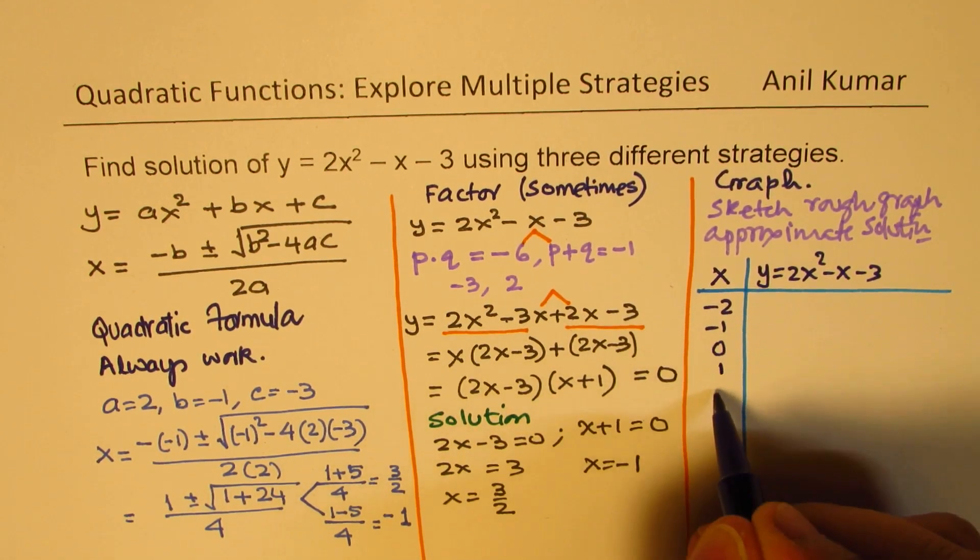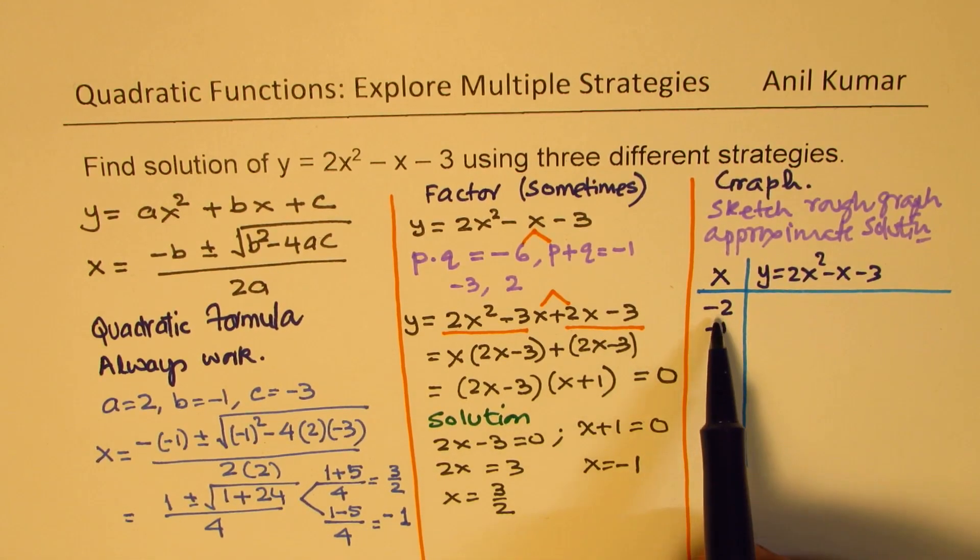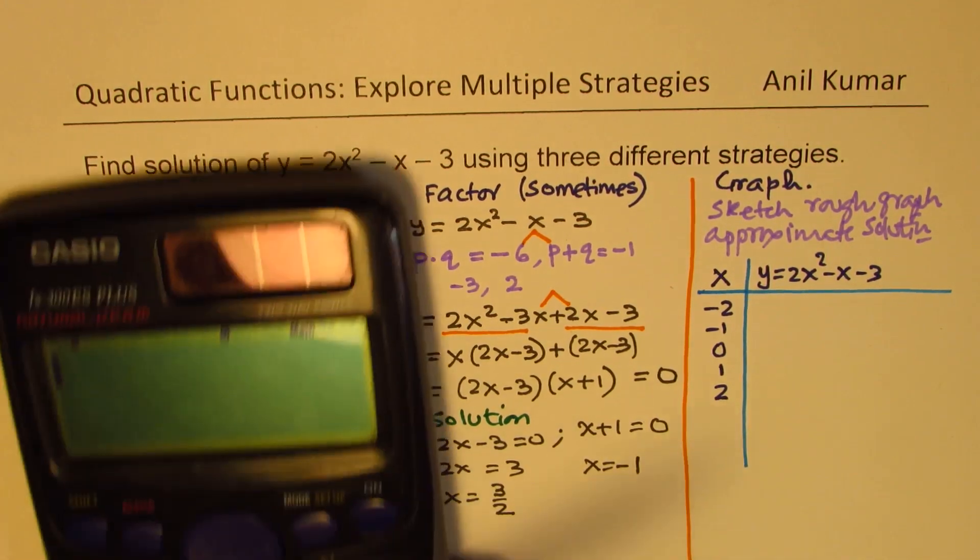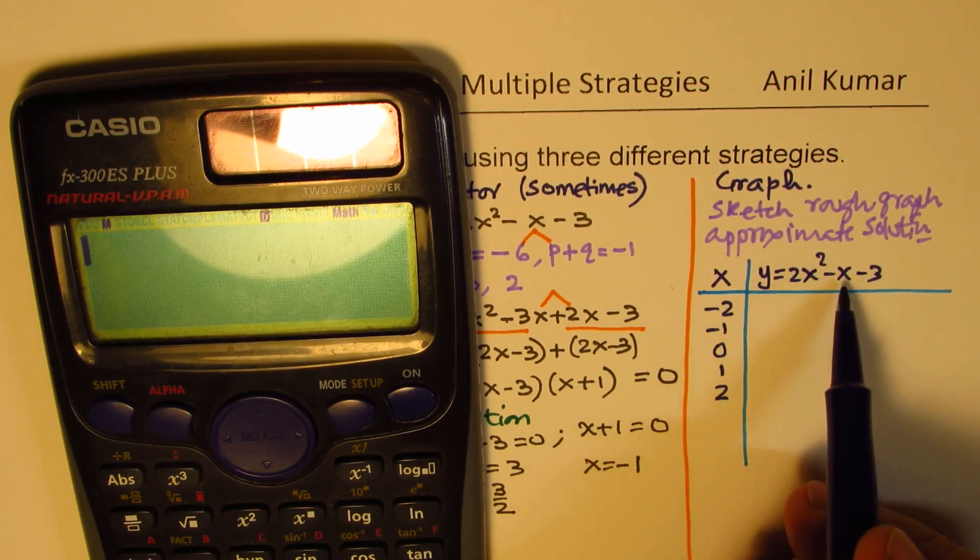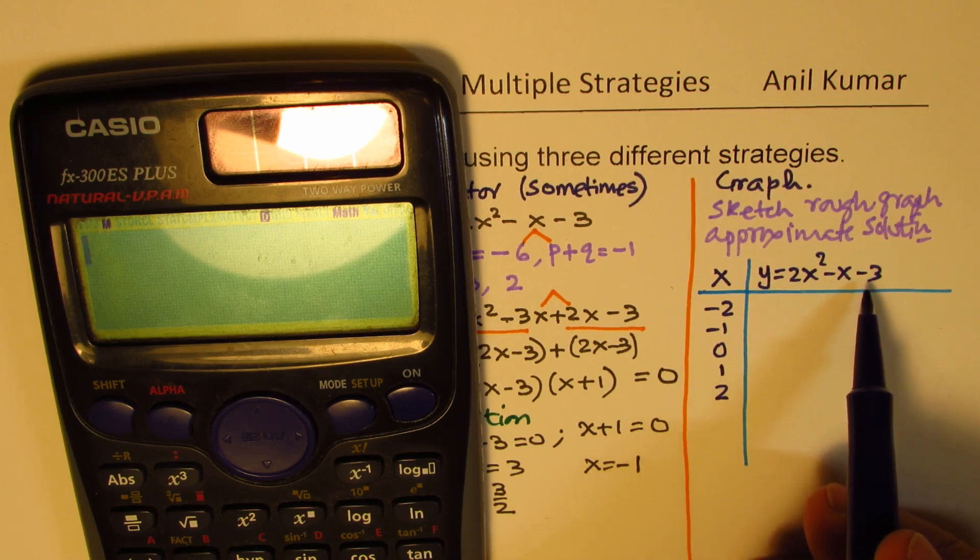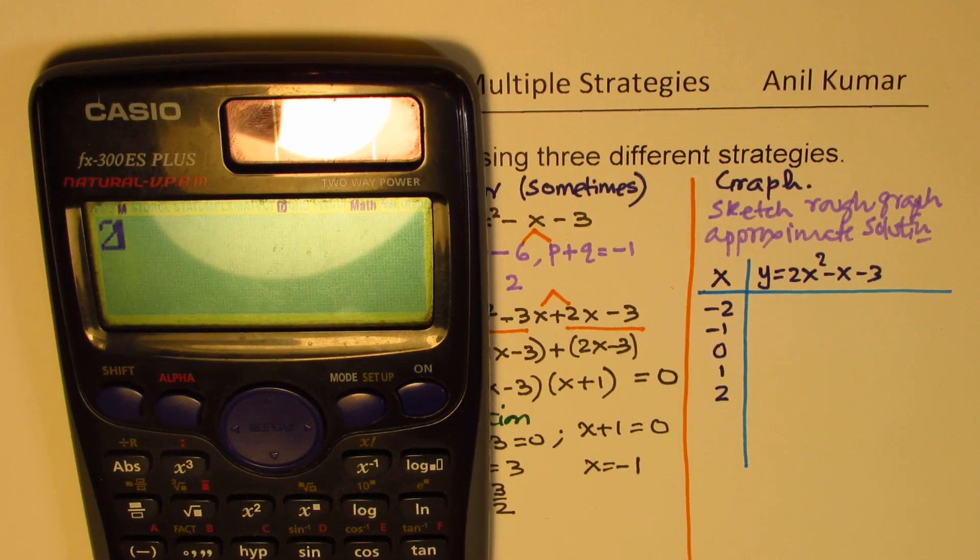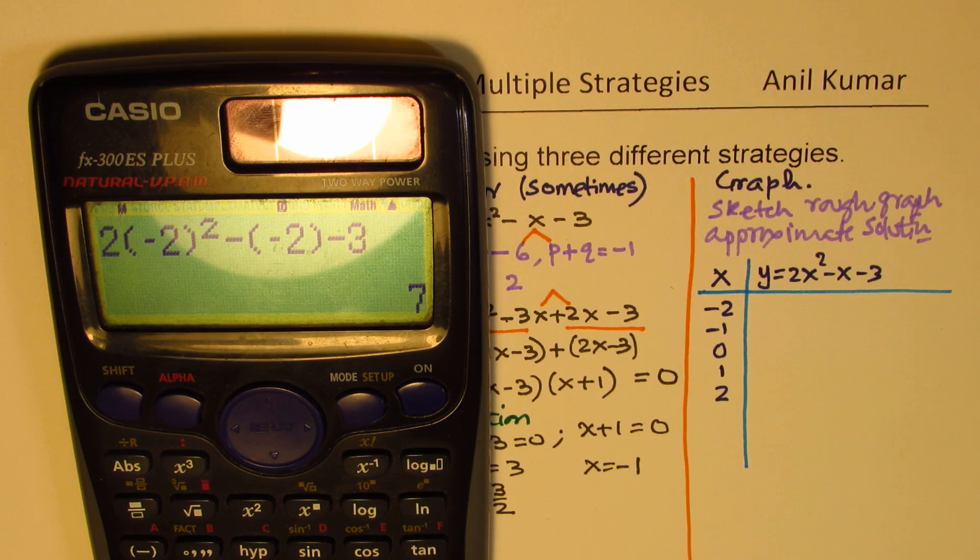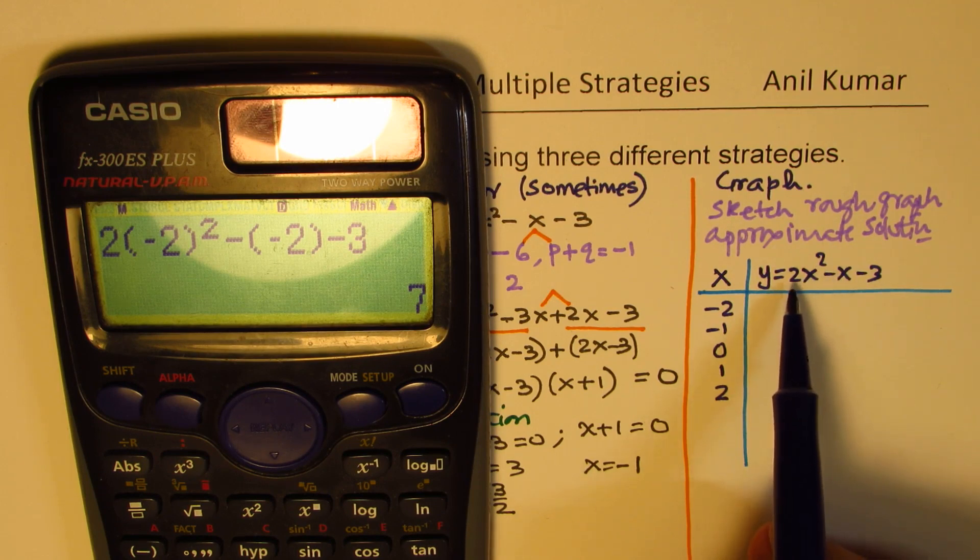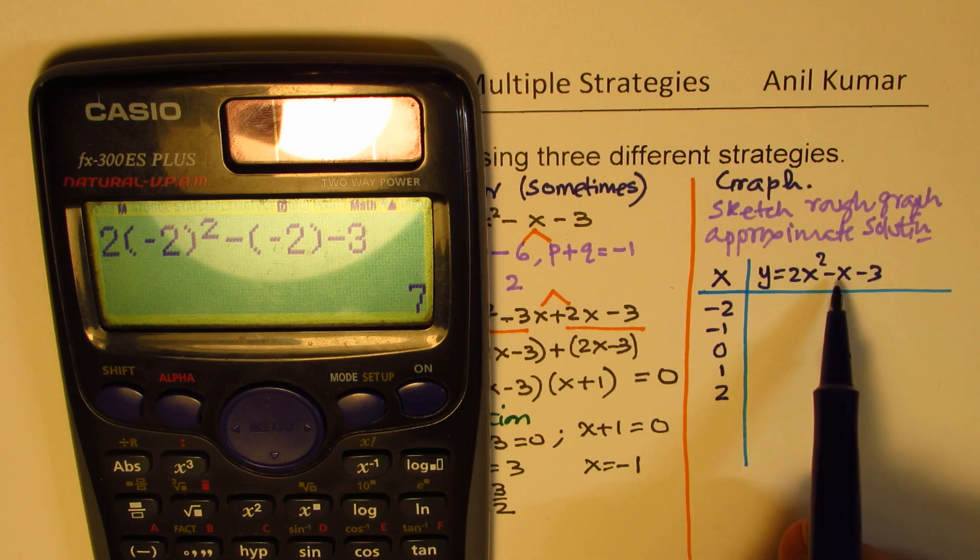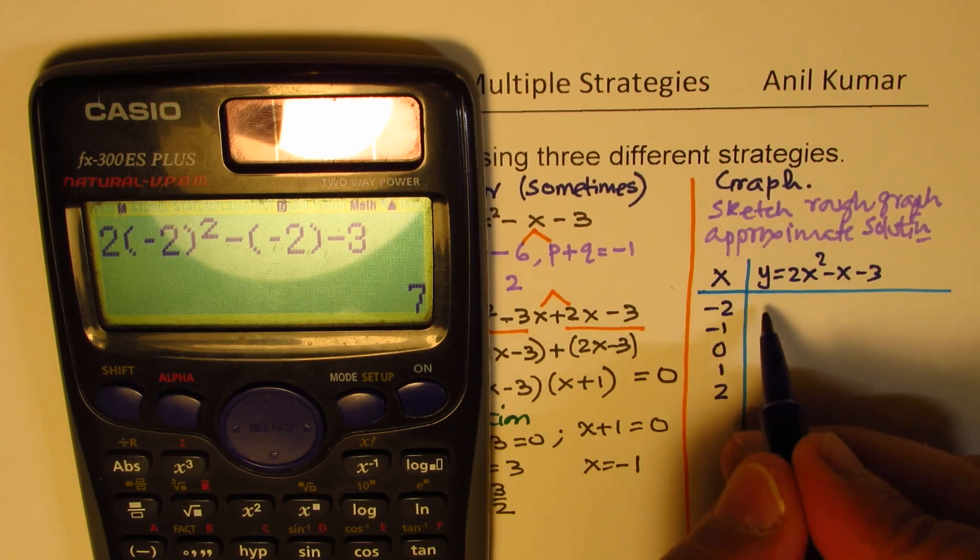So if I substitute minus 2 here, what do I get? Let's use calculator. So minus 2 squared is 4. 4 times 2 is 8. 8 minus 2 is 6. 6 minus 3 is 3. So we get 3. So what we'll do with calculator, 2 times within bracket minus 2 squared minus within brackets minus 2. I'm purposely doing it with calculator to show you that if this equation is more complicated, how do we get the result fast. So we get as expected 7. 4 times 2 is 8. 8 minus minus 2 means 10. 10 minus 3 is 7. So we get this answer is 7.